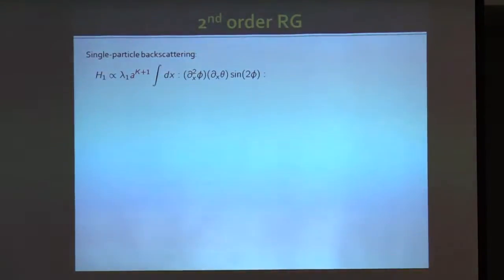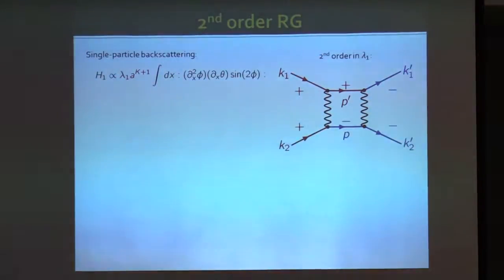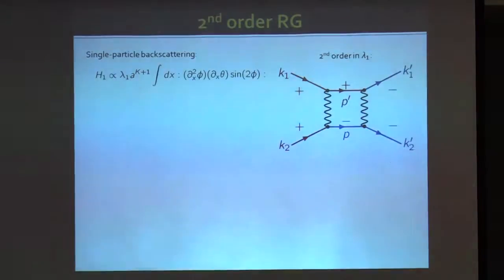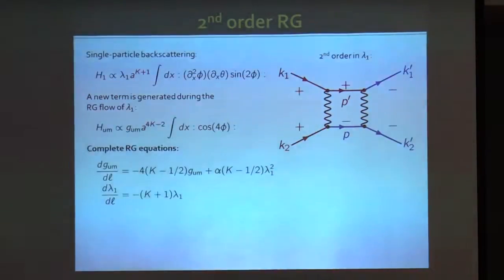We take the Hamiltonian for single-particle backscattering and perform a perturbative RG calculation to second order. To second order, we get a diagram where two single-particle backscattering processes occur: one right mover is backscattered into a left mover, and the other right mover is also backscattered into a left mover — yielding two right movers in the initial state and two left movers in the final state, analogous to umklapp scattering. This intermediate state cancels part of the momentum dependence in the vertices, so the RG flow of this operator generates a relevant term.